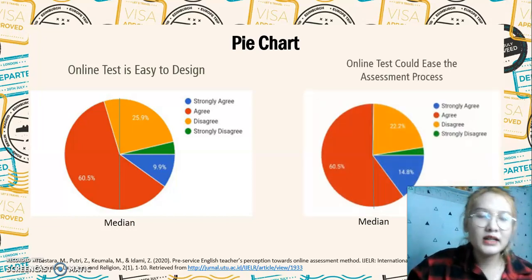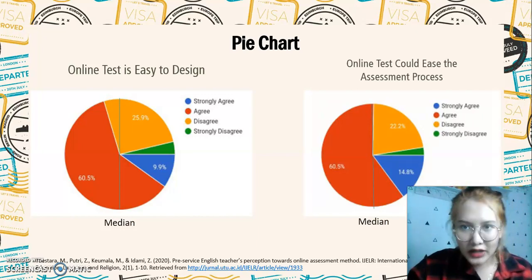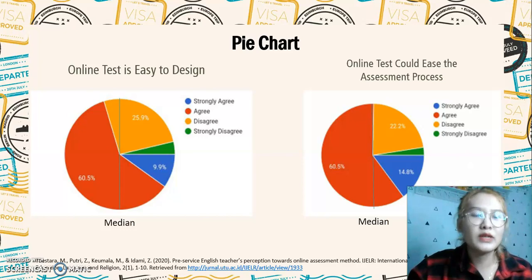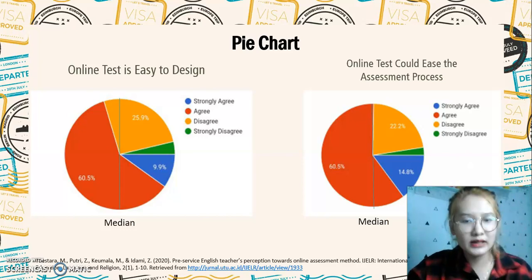For the second statement, as you can see, the central tendency is in the red color as well, so it means that most of the respondents agree with these statements.